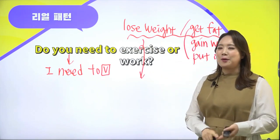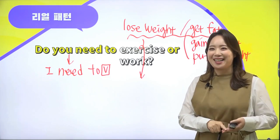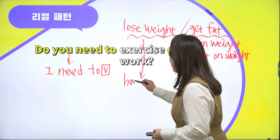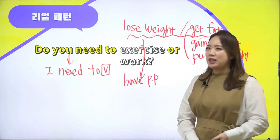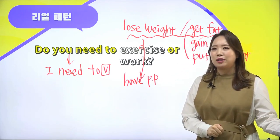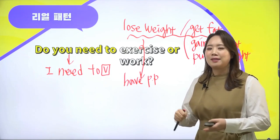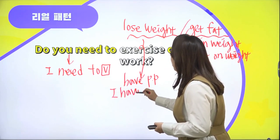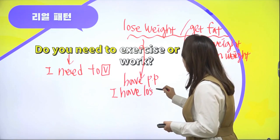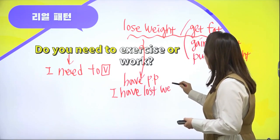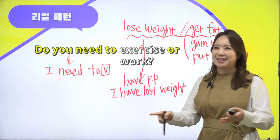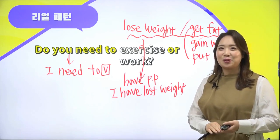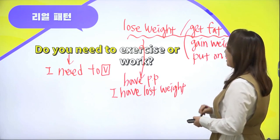나 살 빠졌어라고 얘기할 때 살이 빠진 상태다의 표현인 'have + pp' 형태를 가지고 표현해 보실 수 있는데요. 원어민들은 살 빠진 상태이다라고 해서 표현을 많이 사용해요. 그래서 'I've lost weight'이라고 얘기하면 나 살 빠졌어라는 표현으로 써보실 수 있어요.